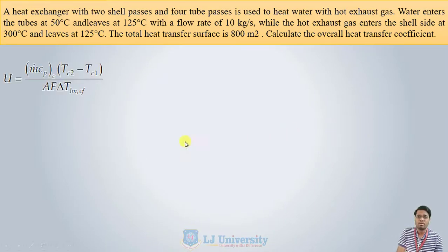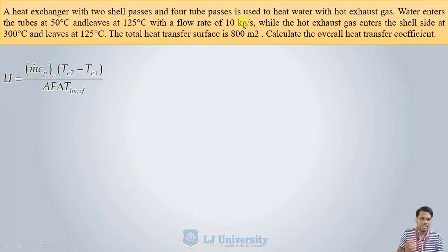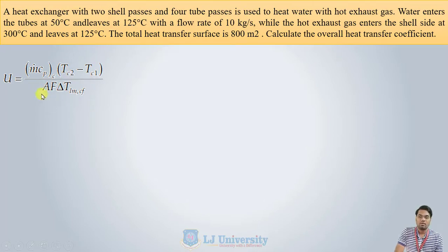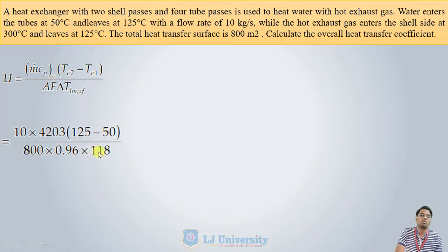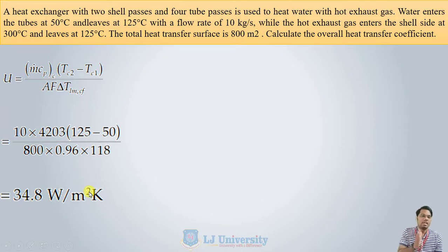Now using Q = U·A·F·ΔT, with U as the only unknown, we first find Q from the cold fluid side: Q = ṁ_c · Cp · (TC2 − TC1) = 10 × 4203 × (125 − 50). With area A = 800 m², F = 0.96, and ΔT_lm = 118°C, solving gives U = 34.8 W/m²·K. This demonstrates how to use the correction factor chart and the modified LMTD equation to find the overall heat transfer coefficient.